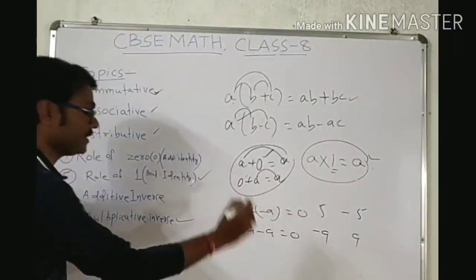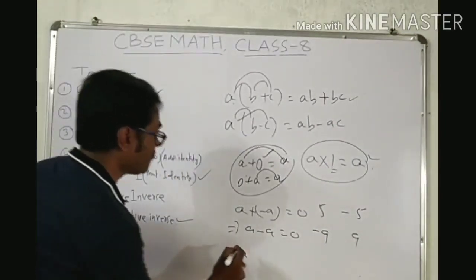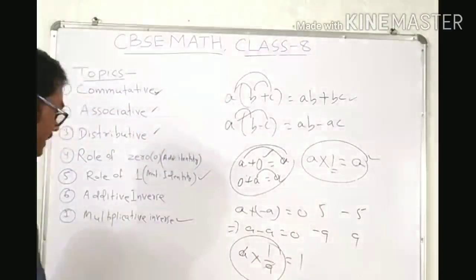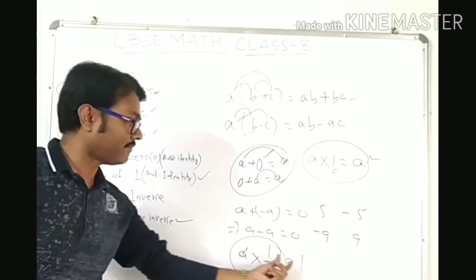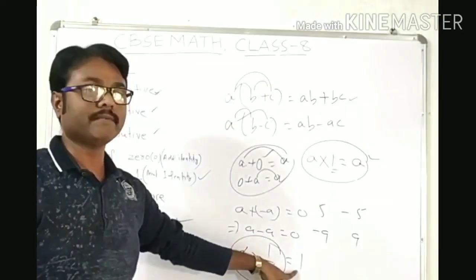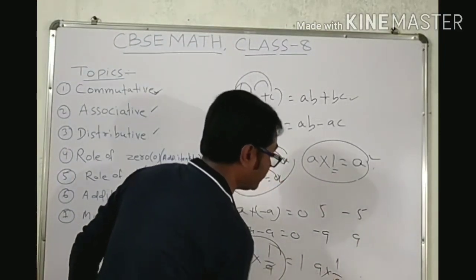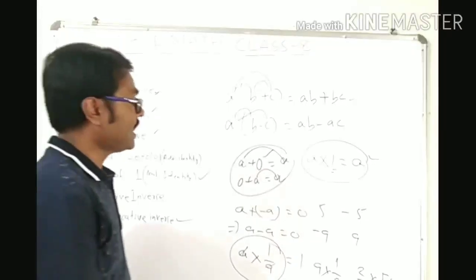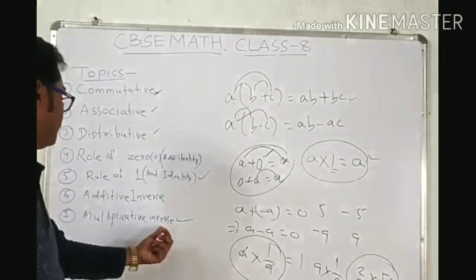Next is multiplicative inverse. Multiplicative inverse means: if A is a rational number, what do we multiply so that the result is 1? The multiplicative inverse of A is its reciprocal, 1 by A. For example, multiplicative inverse of 9 is 1 by 9, and multiplicative inverse of 2 by 5 is 5 by 2. You simply reverse the fraction to get the multiplicative inverse.